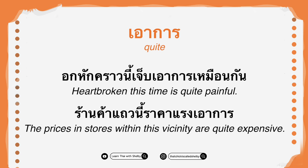Next is เอาการ, which means 'quite something.' Example: อกหักคราวนี้เจ็บเอาการเหมือนกัน — heartbroken this time is quite painful. The word เหมือนกัน here gives the sense that I'm surprised — I didn't think it would be this painful. Another example: ราคาแถวนี้แรงเอาการ — the prices in this area are quite expensive.